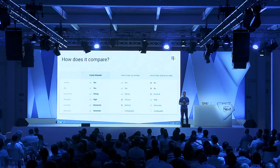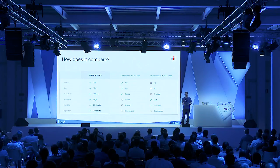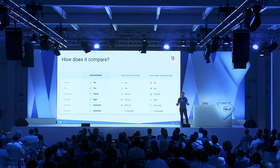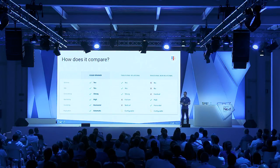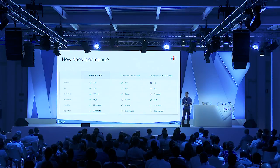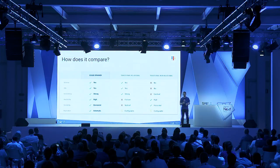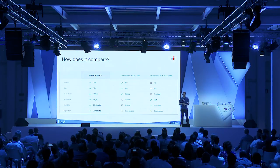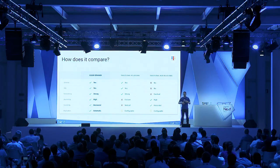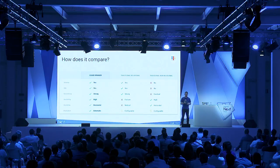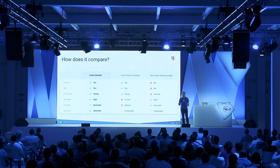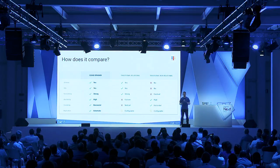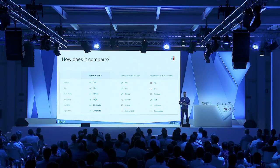How does Spanner compare to a traditional database or a NoSQL scalable database? In one sentence, Spanner gives you the semantics of a relational database with the scalability of a NoSQL database. Spanner provides a strong typed schema, SQL, strong consistency, and behind the scenes adds high availability and horizontal scalability. All data is automatically replicated to read replicas. I'll go into more detail on the architecture and how we achieve high availability and horizontal scalability.